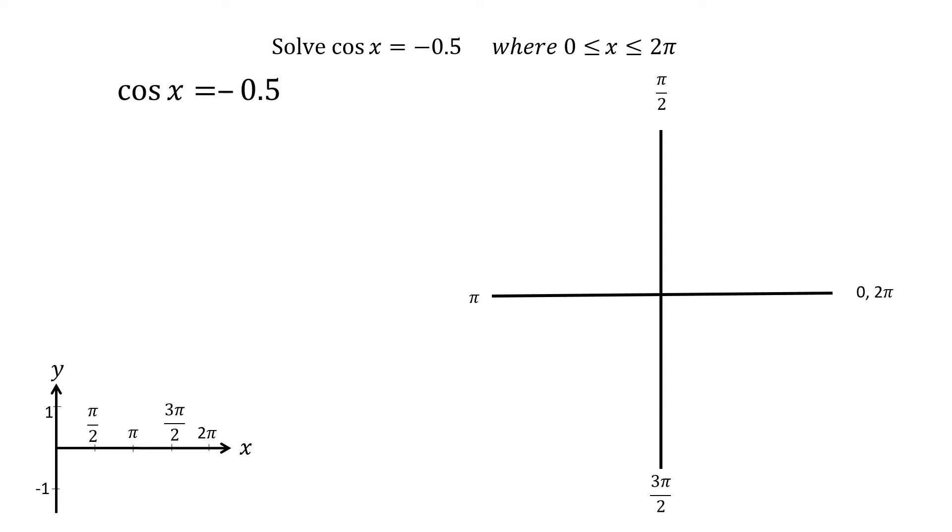To solve cos x equals minus 0.5 between 0 and 2 pi, we first take the inverse cos of both sides of the equation, getting x equals pi over 3.